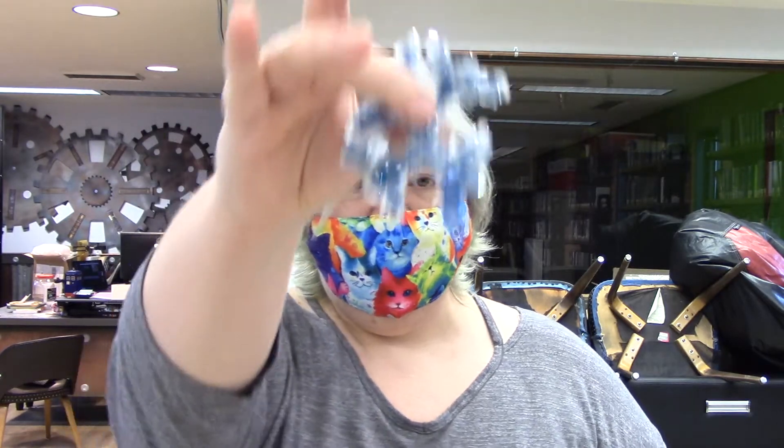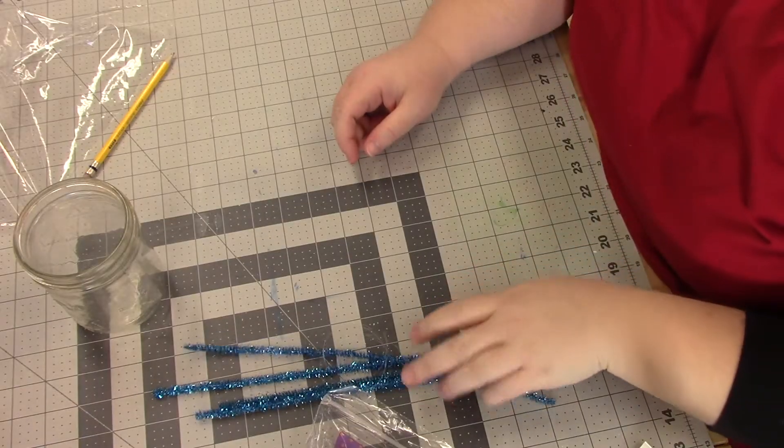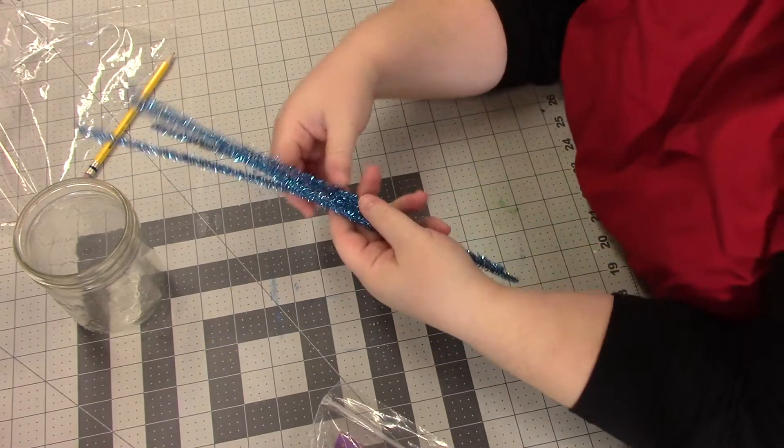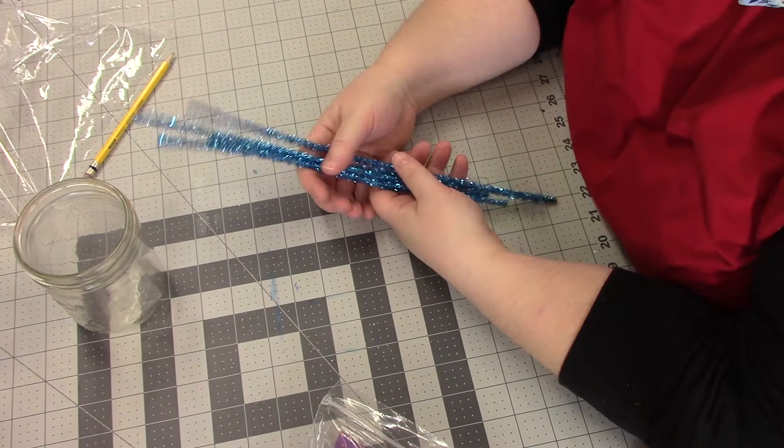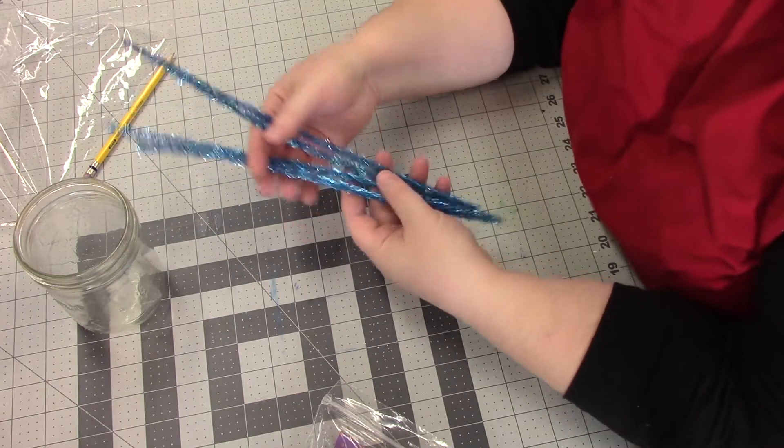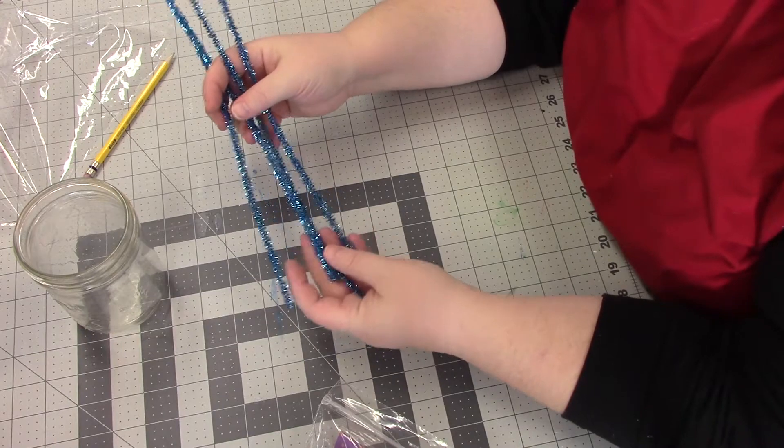So enough of the science background, let's go ahead and hop into it and I will show you what is in your kit. Then we'll go ahead and make the crystal. All right guys, so first I'm just going to go over what is actually in your kit and then we're going to get started. You're going to have four blue pipe cleaners. This is what you're going to use to make your snowflake shape.